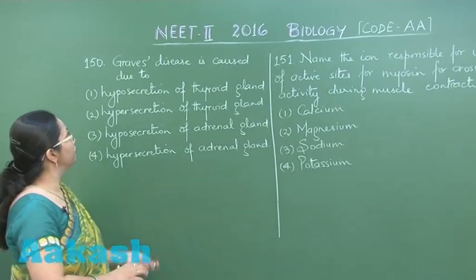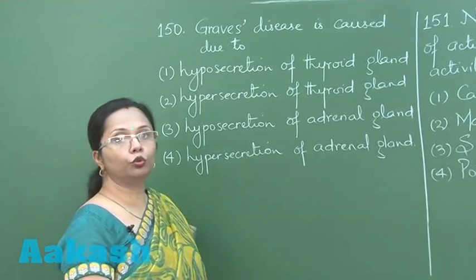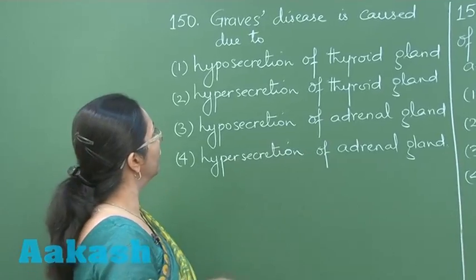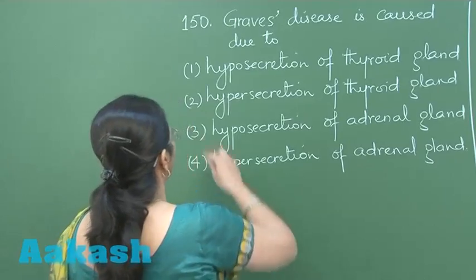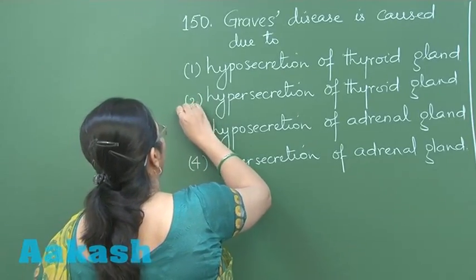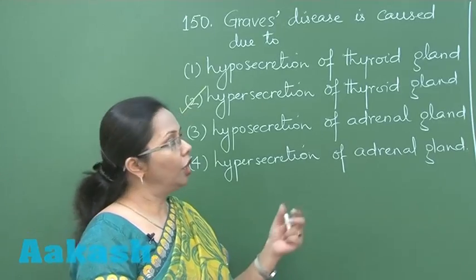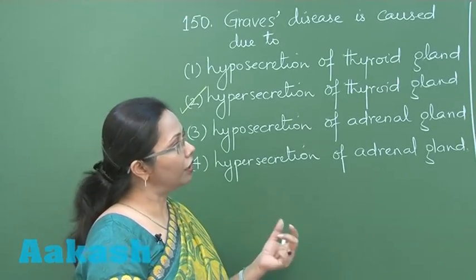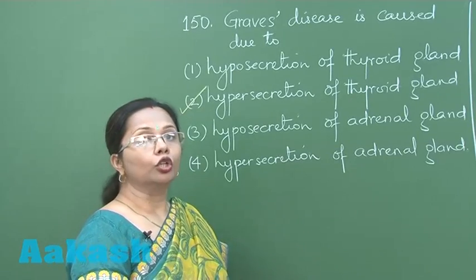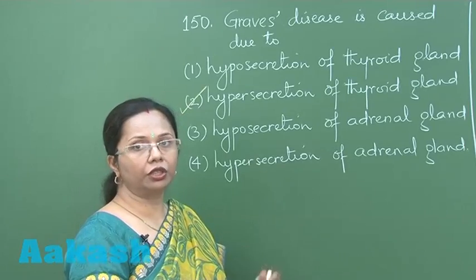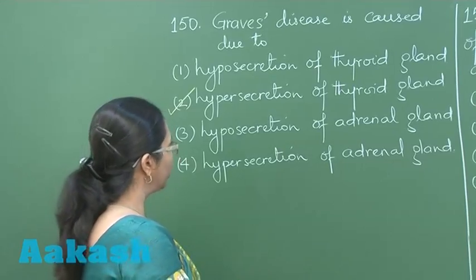Question 150: Graves' disease is caused due to hyperthyroidism — hyper-secretion of the thyroid gland with excessive secretion of thyroxine. It is an autoimmune disorder where antibodies are formed that mimic TSH, so the thyroid is continuously stimulated, producing more and more thyroxine. The correct answer is option 2.